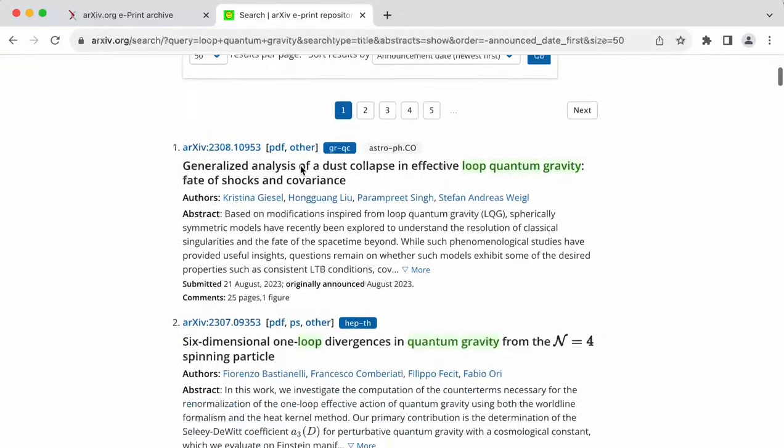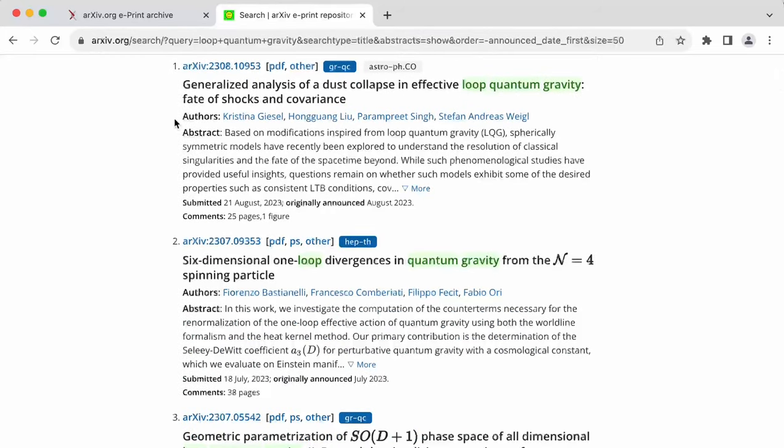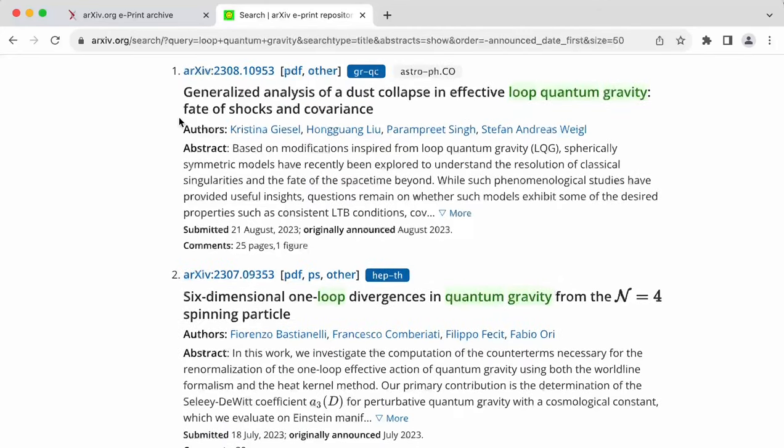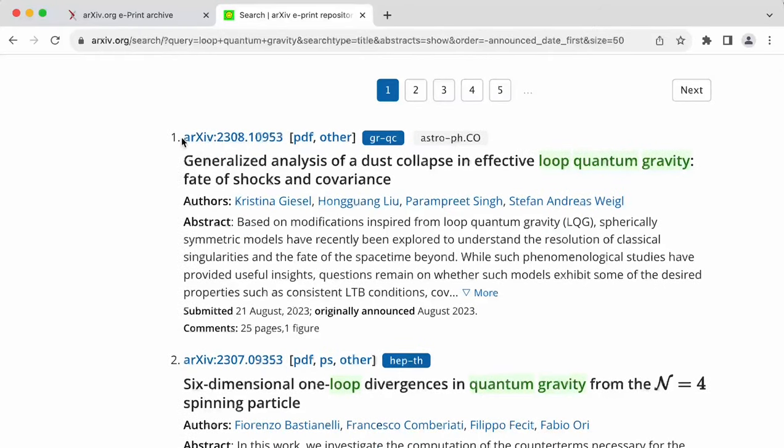Now, you can see here that all of these results have the title, the arXiv identifier, which looks like this. So now, what is this arXiv identifier?